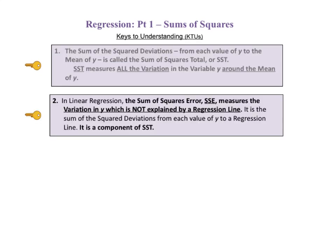The second KTU states, in linear regression, the sum of squares error, SSE, measures the variation in y which is not explained by a regression line. It is the sum of the squared deviations from each value of y to a regression line. It is a component of SST.